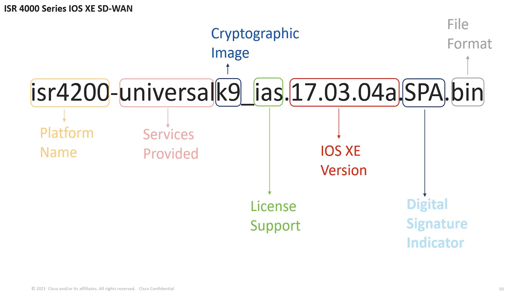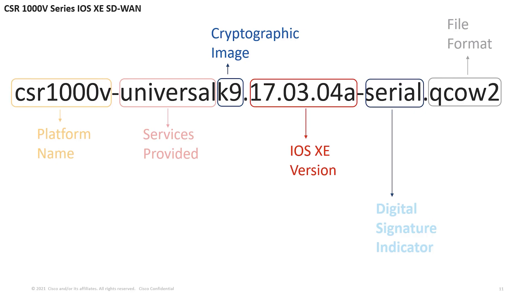On the ISR 4000 series, there are IAS and non-IAS images. IAS is telling the user that there are four different licenses available with this image: I means IP base, A means application experience, and S is SEC or IPSec. The CSR 1000V is a virtual platform. Serial here signifies that this image is a serial image, meaning if you want a serial connection for the OpenStack dashboard, you need this image type. QCOW2 is the storage format that is used for virtual disks.